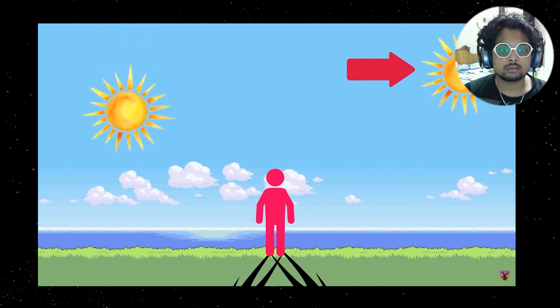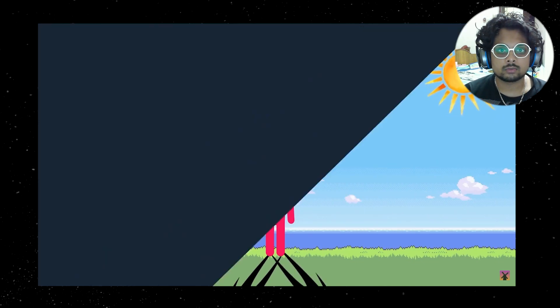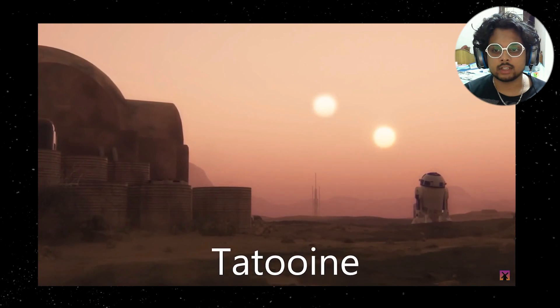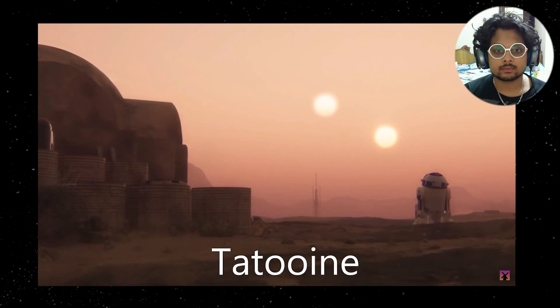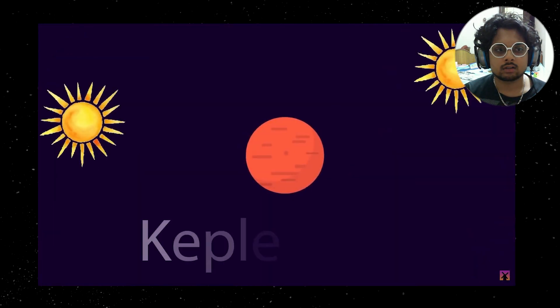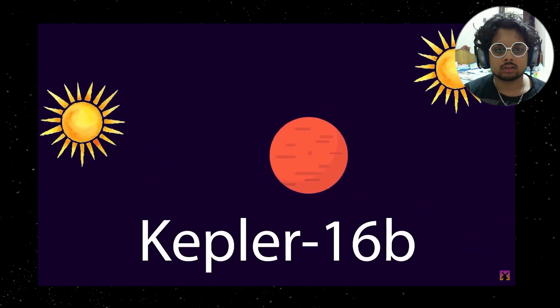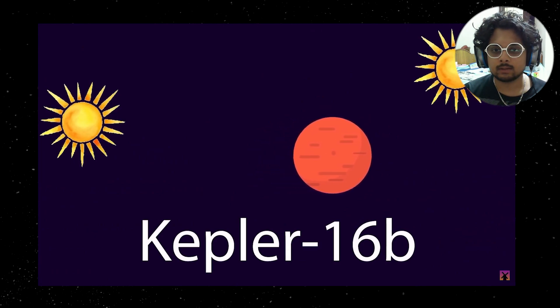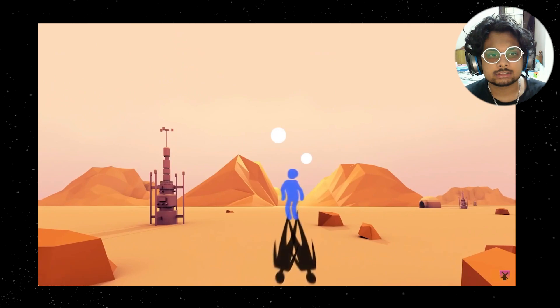A planet that orbits two stars would look much like Tatooine from Star Wars. Yeah, two brilliant sunsets each day and two shadows instead of one for each person. It used to only be science fiction until the planet Kepler-16B was discovered. Kepler-16B, different, what a name.